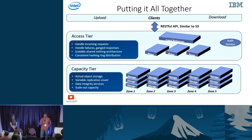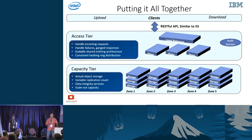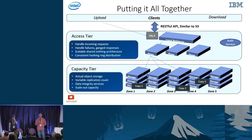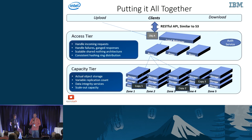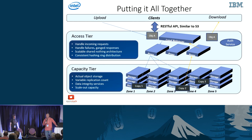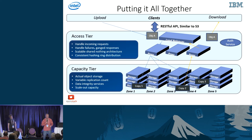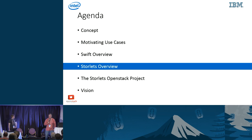Just to give you a visual of what it looks like to put an object into Swift and get it back out — so you can see how Storelets intercepts things. When we put an object into Swift, it comes in through our load balancer in the access tier — load balancer, auth services, and proxy. It gets routed and in this case, using replication, shuffled into three locations within the storage nodes. On the get side, we actually only retrieve it from one place. That's the general Swift overview, and we'll let Hamdi take it over for Storelets.